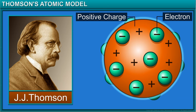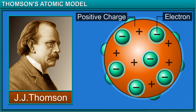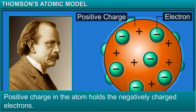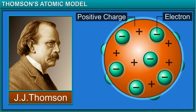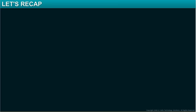Thomson asserted that the positive charge spread through the atom held the negatively charged electrons due to electrical forces. This assertion failed to explain many experimental observations.